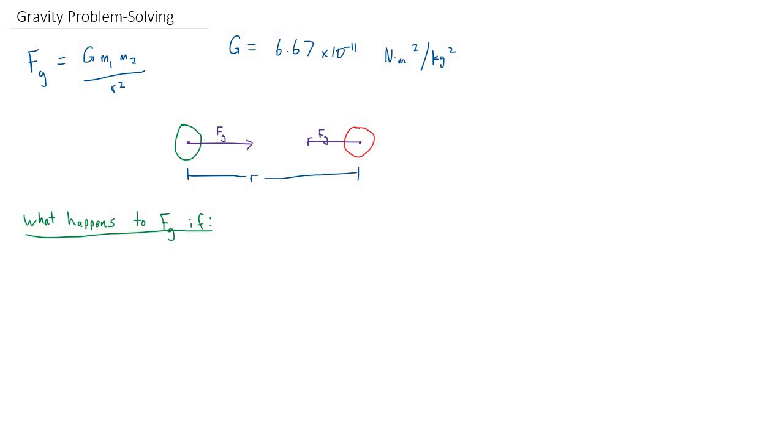Now I want to push our understanding by asking ourselves some questions. What would happen to the force of gravity if we do some different things? What would happen if we doubled one mass? How would that affect the force of interaction between the masses? As a technique for finding answers to questions like this, I'm going to copy down the same formula.